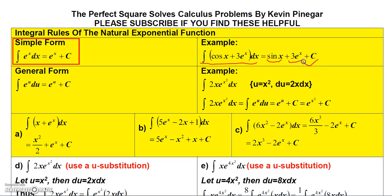We also have the general form: if you're integrating e^u du, it equals e^u plus a constant. Just like our other formulas, everything else in the integral must constitute du, otherwise this won't work.